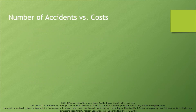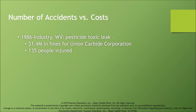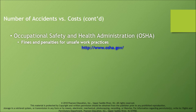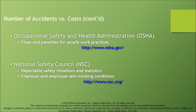Number of accidents versus costs: In 1986, a pesticide toxic leak in WV resulted in $1.4 million in fines for Union Carbide Corporation and 135 people injured. In 1991, a chicken plant fire in Hamlet, NC resulted in 25 employees killed and 56 injured, with OSHA levying fines of $808,000. OSHA — the Occupational Safety and Health Administration — issues fines and penalties for unsafe work practices; more information at www.osha.gov. The National Safety Council (NSC) tracks reportable safety violations and statistics and promotes employer and employee safe working conditions; more at www.nsc.org.